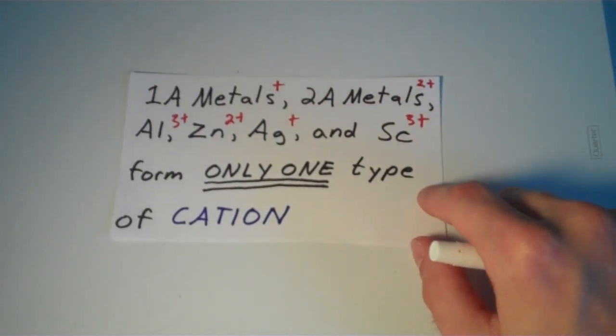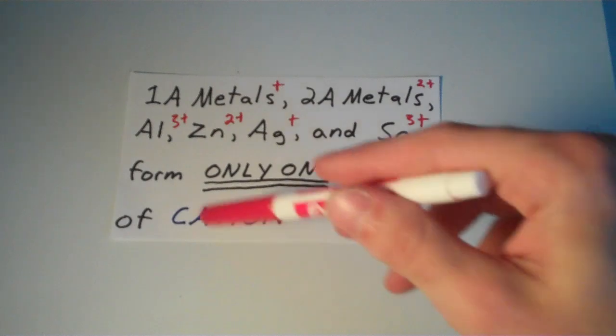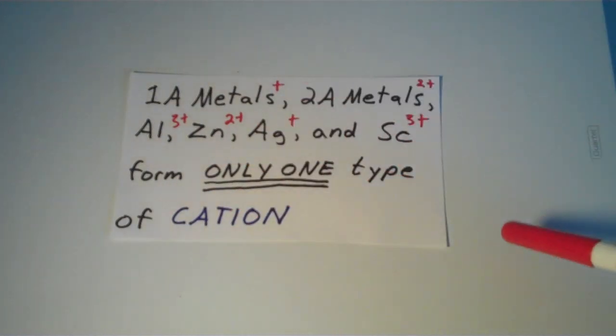So if your metal is any metal other than these metals that are listed here, then you're going to need to use a Roman numeral to specify the charge of the cation that metal forms. So let's go through a couple of examples.